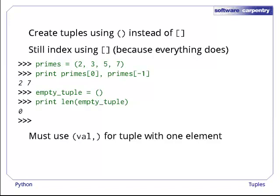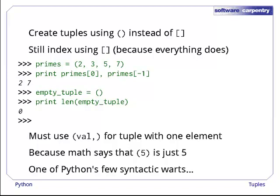If we want to create a tuple of just one value, we have to put a comma after that value and before the closing parenthesis. It looks a little odd, but otherwise, 5 in parentheses would be ambiguous. Mathematically, it's the same as 2 plus 3 in parentheses. This trailing comma is easy to forget and is one of Python's few syntactic warts.